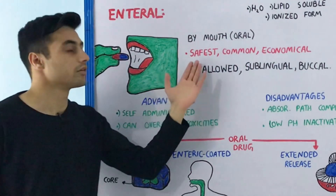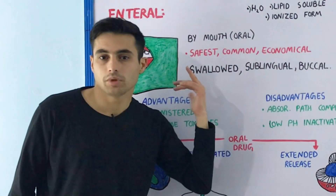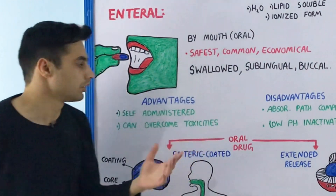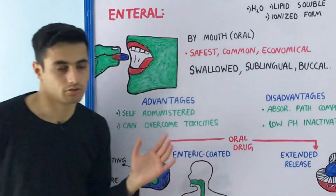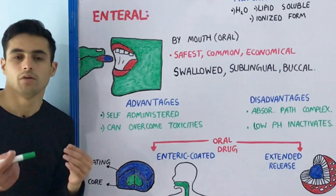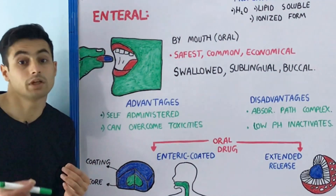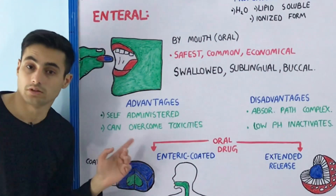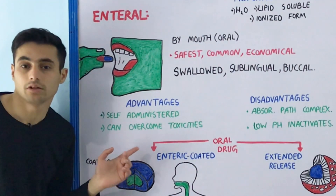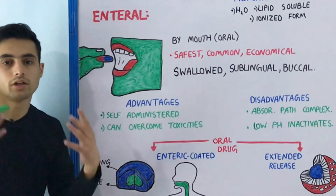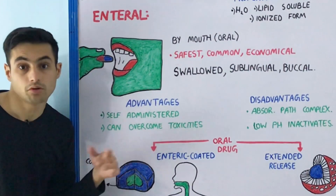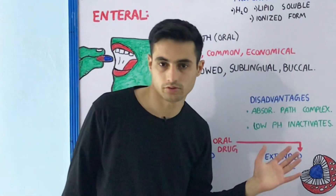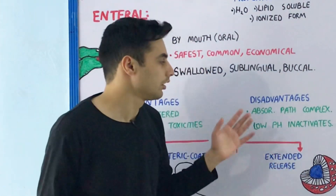The enteral route has certain advantages over the parenteral and topical routes. It is the safest, most common, and most economical — enteral medications are very cheap compared to topical and parenteral routes. The biggest advantage is that patients can take the medication themselves; it is self-administered. Also, toxicities can be overcome with the use of antidotes if a patient takes too much medication.